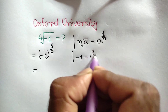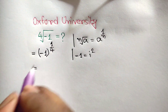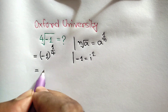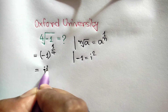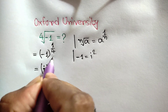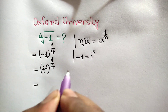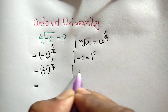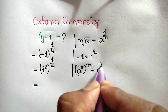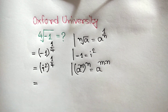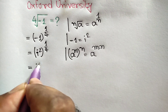We also know that negative one is equal to i squared, where i is an imaginary number. Applying this rule, we can write i squared, whole to the power one over four. We know that a to the power m, whole to the power n, is equal to a to the power m times n. Applying this rule, we can write i to the power two times one over four.